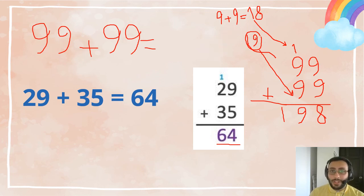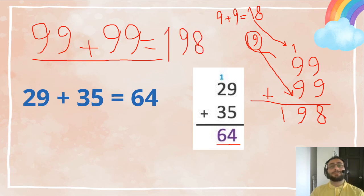So, let's do it one more time. 99 plus 99 equals 198. You should be able to do this by now.